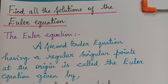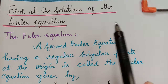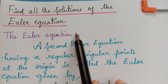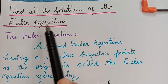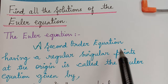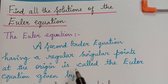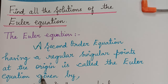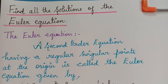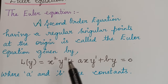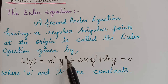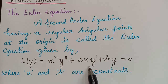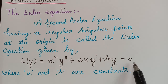Hello students. Under the topic of linear equations with regular singular points, here we have an important theorem. We shall find all the solutions of the Euler equation. A second order equation having a regular singular point at the origin is called the Euler equation, and it is given by L of y equal to x squared y double dash plus Ax y dash plus By equal to 0.